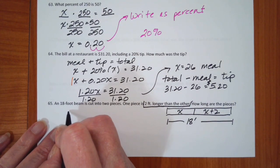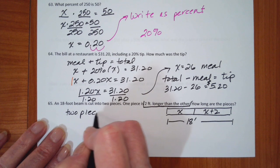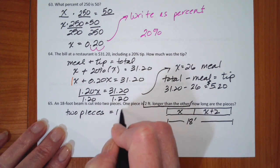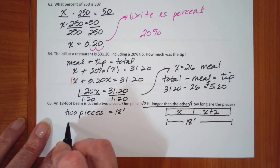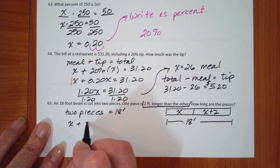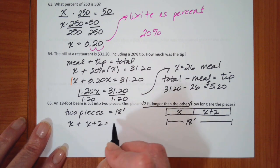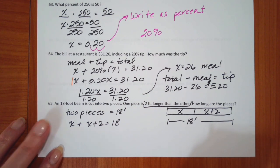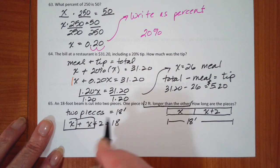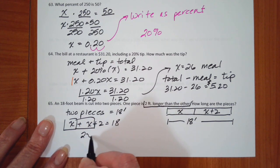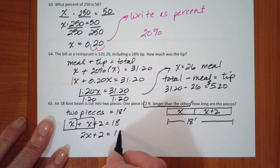So the two pieces equal 18 feet. Well, the two pieces are x and x plus 2 equals 18. I have an x. I have another x. So 2x plus 2 is 18.